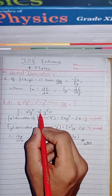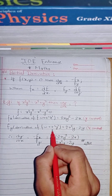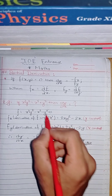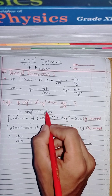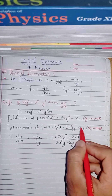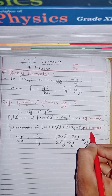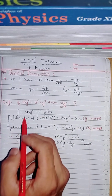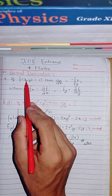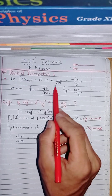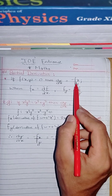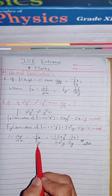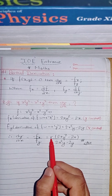So the derivative with respect to y gives us the constant terms. Now we have fx and fy, so we apply the formula: if f(x, y) = 0, then dy/dx = -fx/fy. We write dy/dx is equal to minus fx by fy. Now substituting the values of fx and fy: dy/dx = minus fx divided by fy.